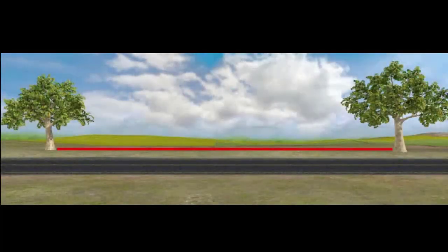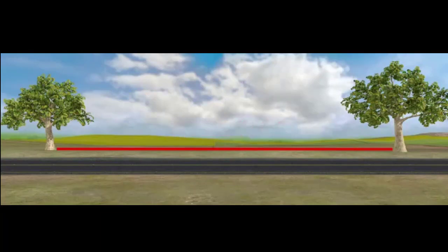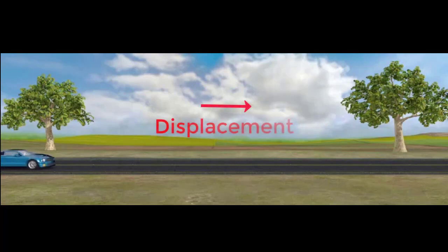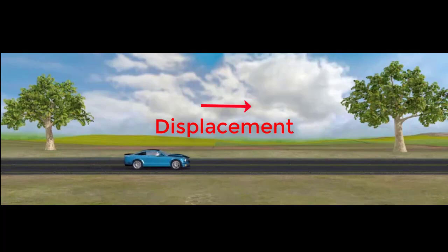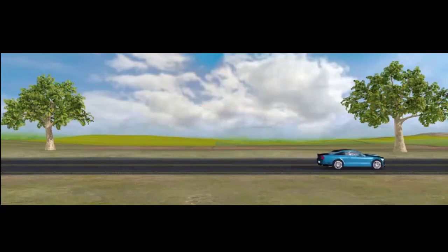Let's consider the distance and displacement example. Distance is the space between two objects, which can be measured on a scale and describes magnitude alone. But on the other hand, displacement is the change in the position of an object. In the animation, a car changes its position to the east — notice that direction is emphasized as well.